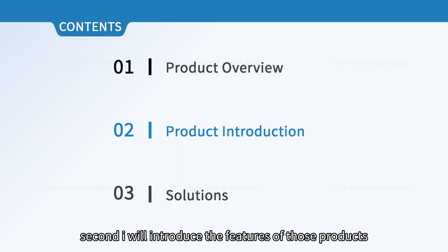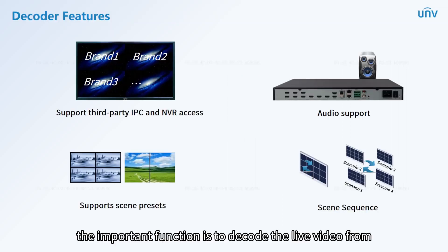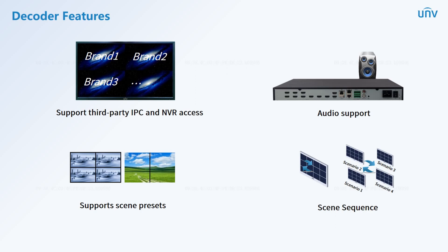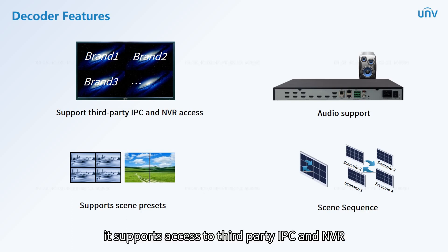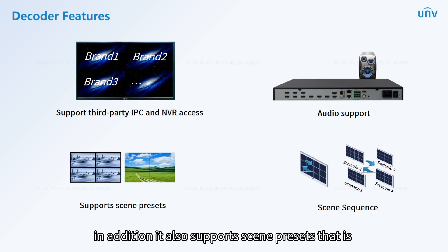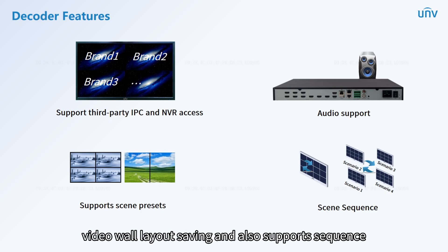For the decoder, the important function is to decode live video from IP cameras and display it on the video wall. In terms of decoding, it supports access to third-party IPC and NVR, and supports audio decoding. It also supports scene presets — that is, video wall layout saving — and supports sequence, including window sequence and scene sequence.